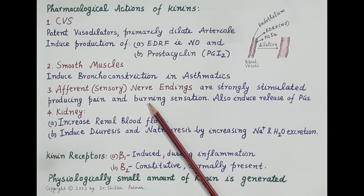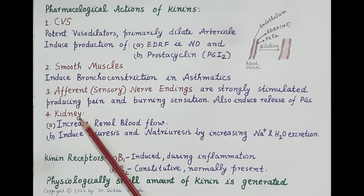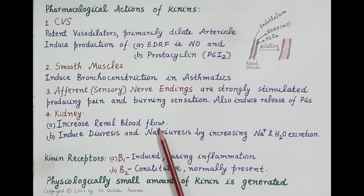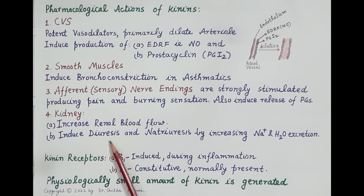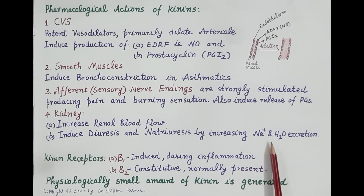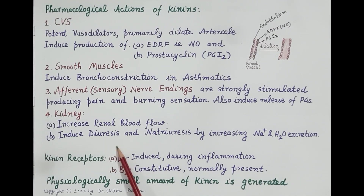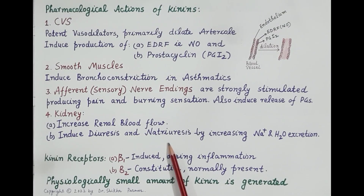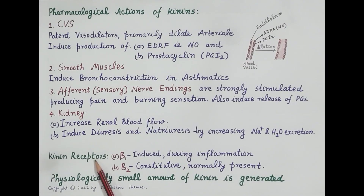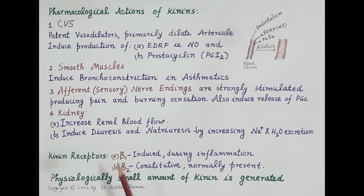The next effect is on the kidneys. As kinins are vasodilators, they increase renal blood flow — the flow of blood to the kidneys. Kinins also induce diuresis, meaning they increase the volume of urine by increasing the excretion of sodium and water by the kidneys. This causes natriuresis, which is the presence of sodium in the urine.